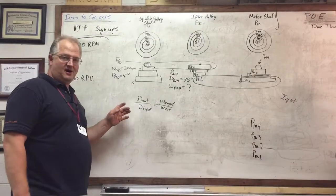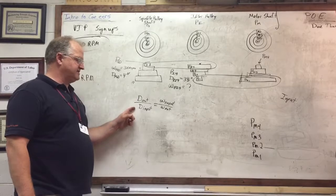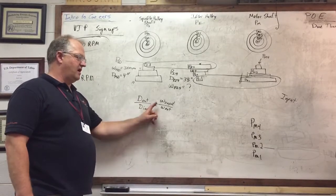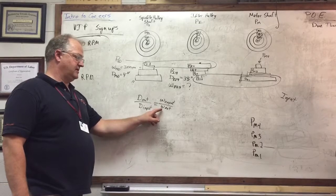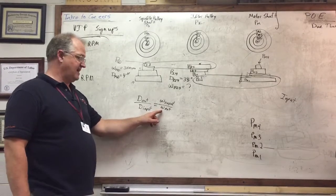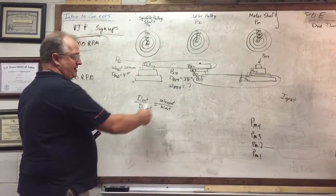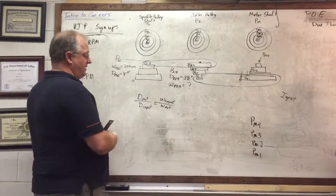All right, so we've got our diameter of the output versus diameter of the input, our angular velocity of our speed of the input over our angular velocity of the output. So let's replace these with some variables that we know.